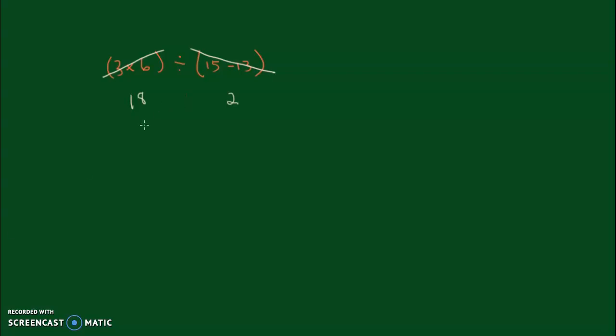And, now, I bring down my division symbol. And, then I have 18 divided by 2, which is 9. So, three times six in parentheses divided by 15 subtract 13 in parentheses equals 9.